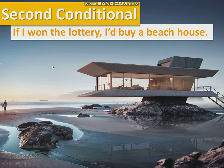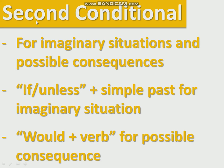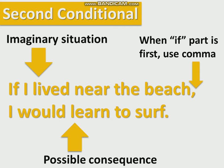But today we're talking about the second conditional. For example, if I won the lottery, I'd buy a beach house. In Portuguese: se eu ganhasse a loteria, eu compraria a beach house. The second conditional is for imaginary situations and their possible consequences. We use 'if' and 'unless' plus the simple past for the imaginary situation, and we use 'would' and a verb for the possible consequence. For example, if I lived near the beach, I would learn to surf. 'If I lived near the beach' is the imaginary situation; 'I would learn to surf' is the possible consequence. In Portuguese: si eu morasse near the beach, eu aprenderia to surf.